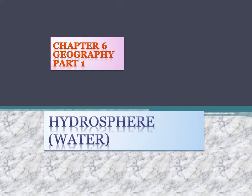In this video, we are going to discuss about distribution of water, different forms of water, the hydrological cycle — that means water cycle — importance of the hydrological cycle, and major oceans and their water circulations. So these are some of the important topics which we are going to discuss in this video.